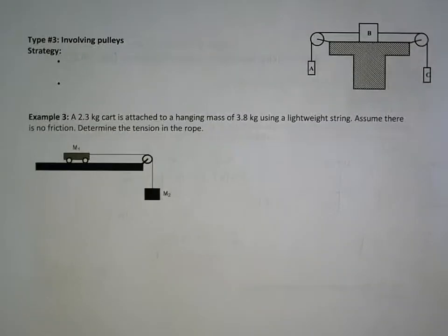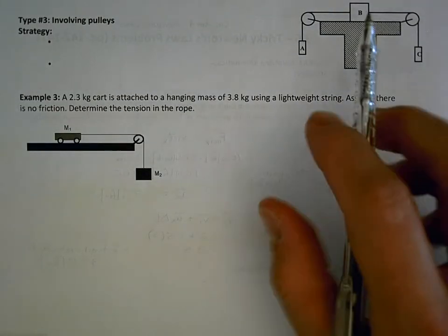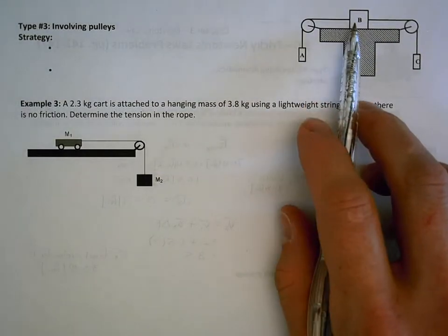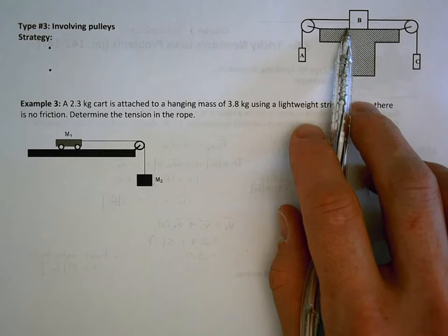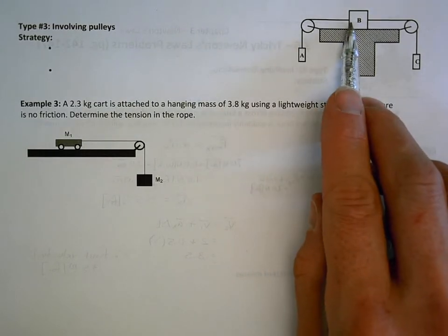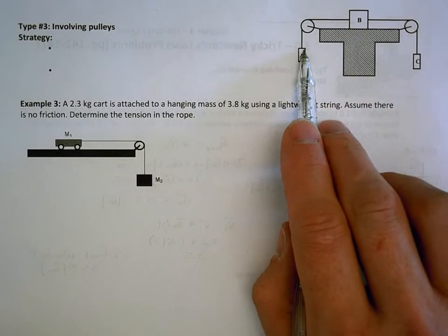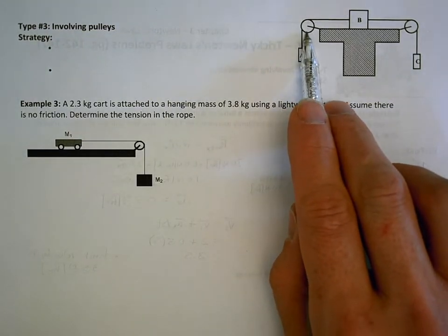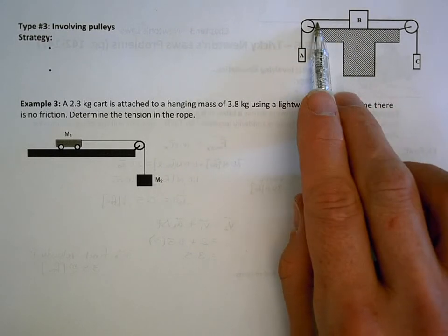We have one final example — question three. The third type of difficult problem is where you have pulleys. Pulleys don't really complicate the problem too much. This is very similar to the second example, except the pulley changes the direction of the force. So in this case, the tension force is acting up, and then the pulley changes it so the tension force is acting to the left.